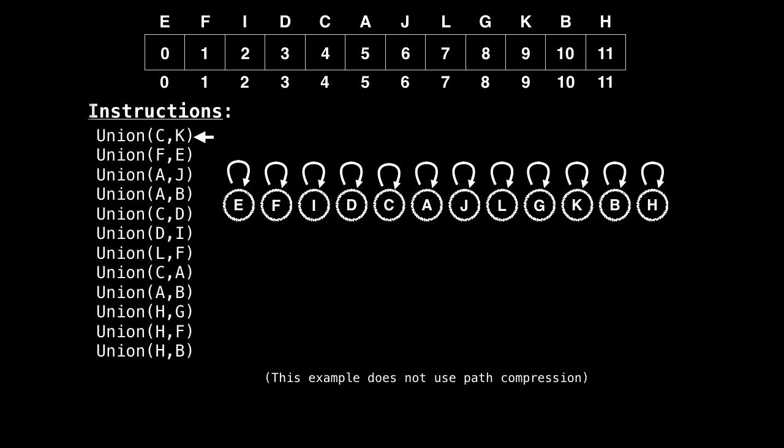So, for instance, if we want to unify c and k, we look at c and k, and we discover that c has a root node of four, and k has a root node of nine. So either c is going to become k's parent, or k is going to become c's parent. And I chose that k's parent is going to be c.